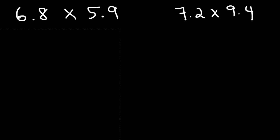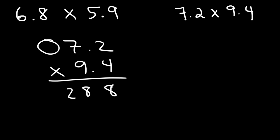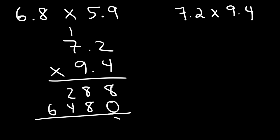Now let's move on to the next example: 7.2 times 9.4. So first, let's multiply 4 by 2, which gives us 8. And then 7 times 4 is 28, so we can write the entire 28. Now let's add a 0 for the next row. We have 9 times 2, which is 18, so carry over the 1. And 9 times 7 is 63 plus 1, so that's 64. So 8 plus 0 is 8. 8 plus 8 is 16, carry the 1. 1 plus 2 plus 4 is 7. Bring down the 6. We have 2 digits to the right of the decimal point, so our final answer is 67.68.